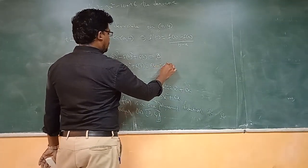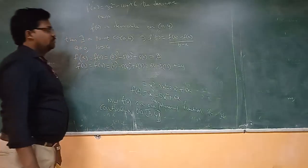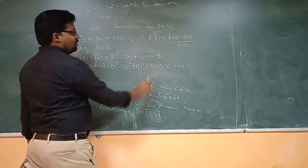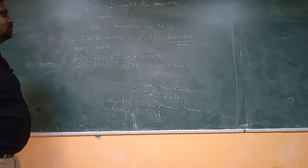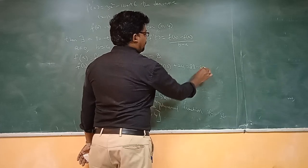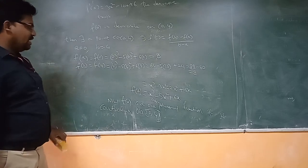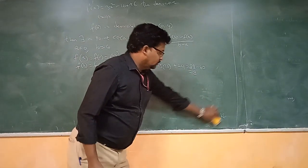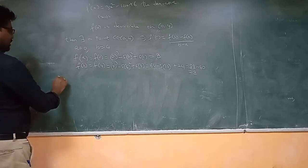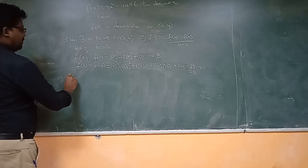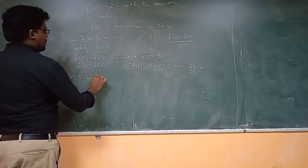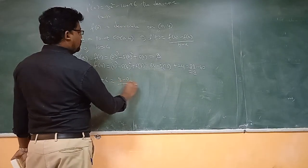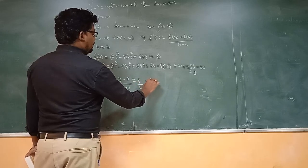Now f(b) = f(4) = 4³ − 5(4²) + 6(4) = 64 − 5(16) + 24 = 64 − 80 + 24 = 8. So f(b) minus f(a) by b minus a equals 8 minus 0 by 4 minus 0, which is 8 by 4, that is 2.